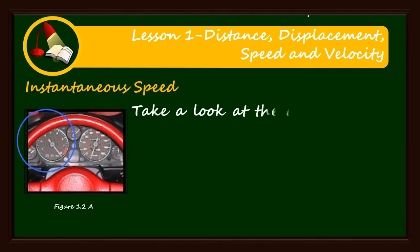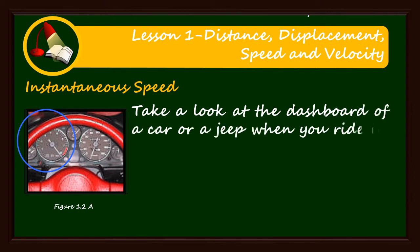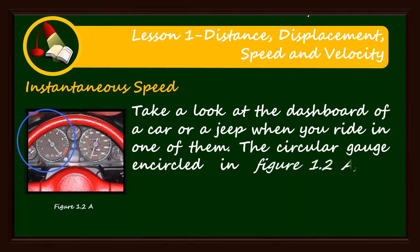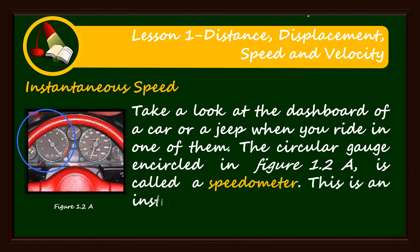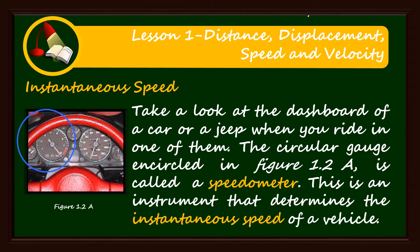Take a look at the dashboard of a car or a jeep when you ride in one of them. The circular gauge encircled in figure 1.2a is called a speedometer. This is an instrument that determines the instantaneous speed of a vehicle.